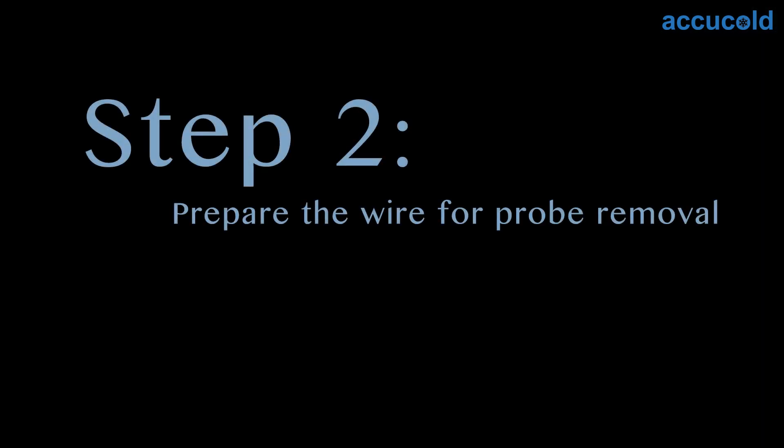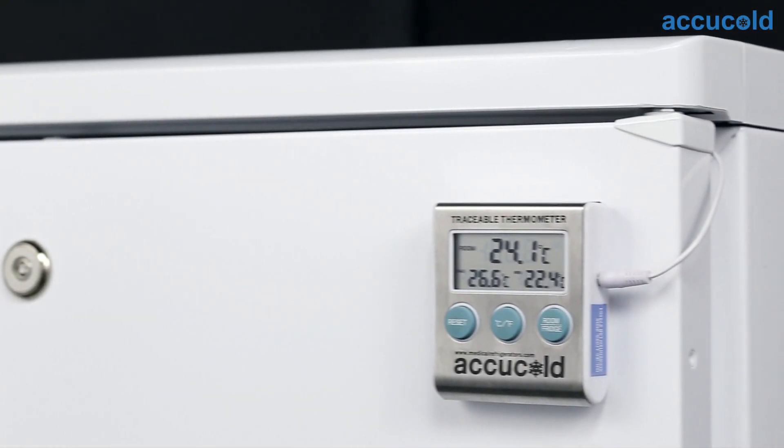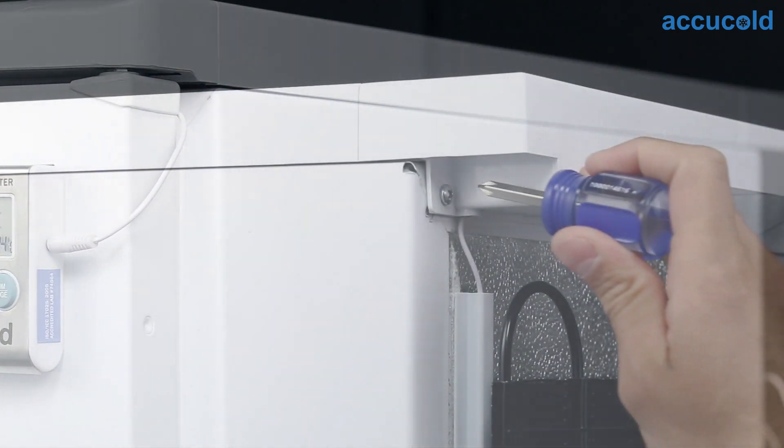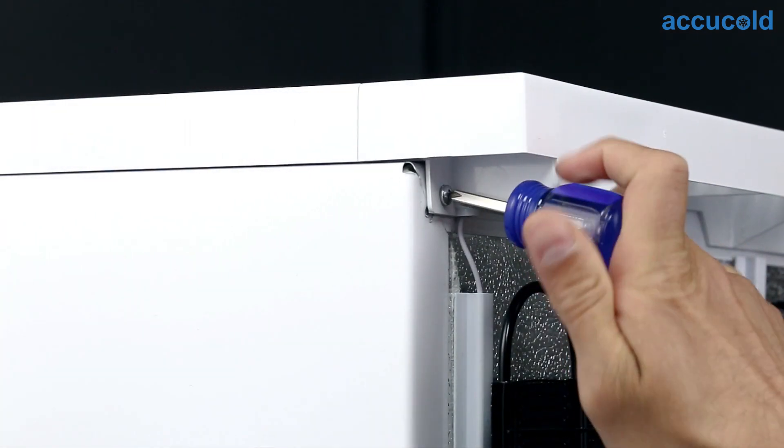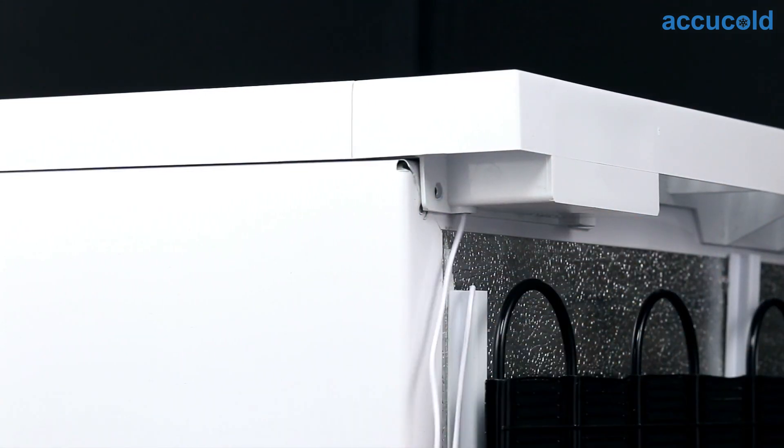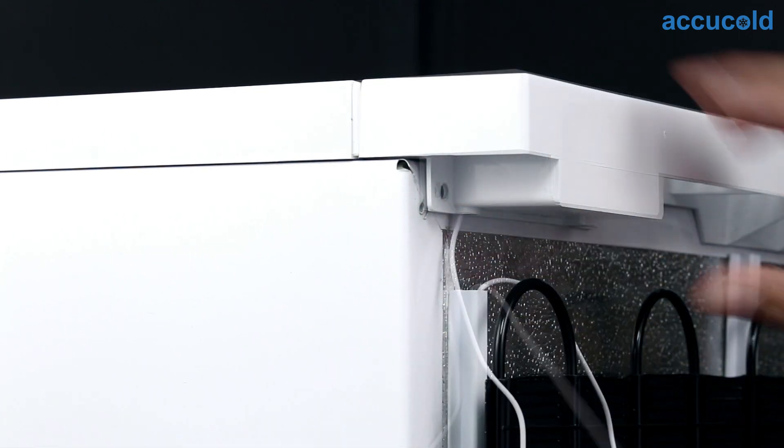Step two, prepare the wire so you're able to remove the probe. Begin by finding the wire's path to the back of the unit. If the wire runs through the tabletop, loosen the tabletop by removing the top left screw on the back of your appliance. Gently pull the wire through the tabletop.